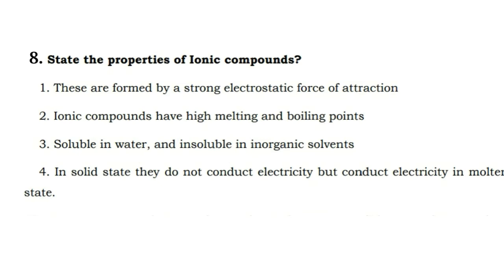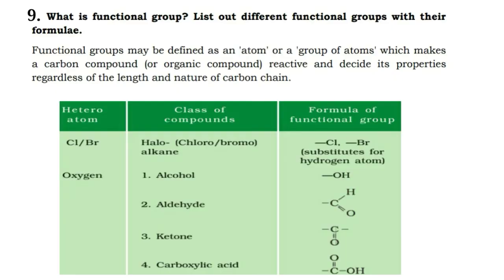Next question: state the properties of ionic compounds. An example of an ionic compound is table salt (common salt). They are crystalline in nature, have high melting and boiling points, and are formed by a strong electrostatic force of attraction. They are soluble in water but not in organic solvents. In the solid state they do not conduct electricity, but in the molten (liquid) state they will conduct electricity.